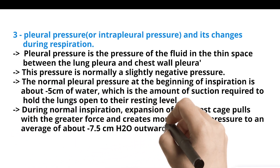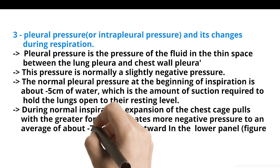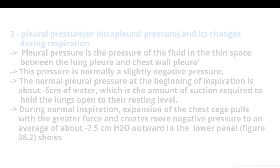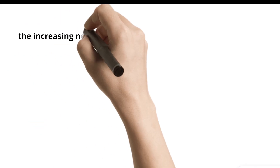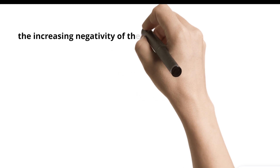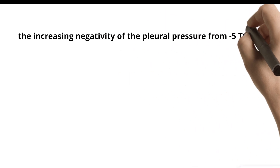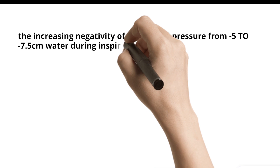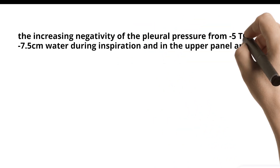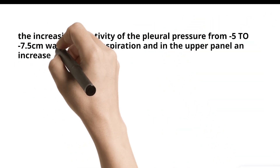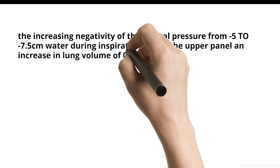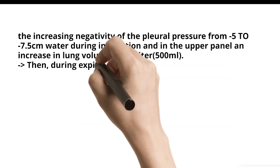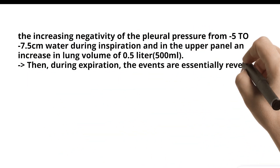As shown in the lower panel of figure 38.2, pleural pressure increases in negativity from minus five to minus 7.5 centimeter water during inspiration, and in the upper panel, there is an increase in lung volume of 0.5 liter (500 milliliter). During expiration, the events are essentially reversed.